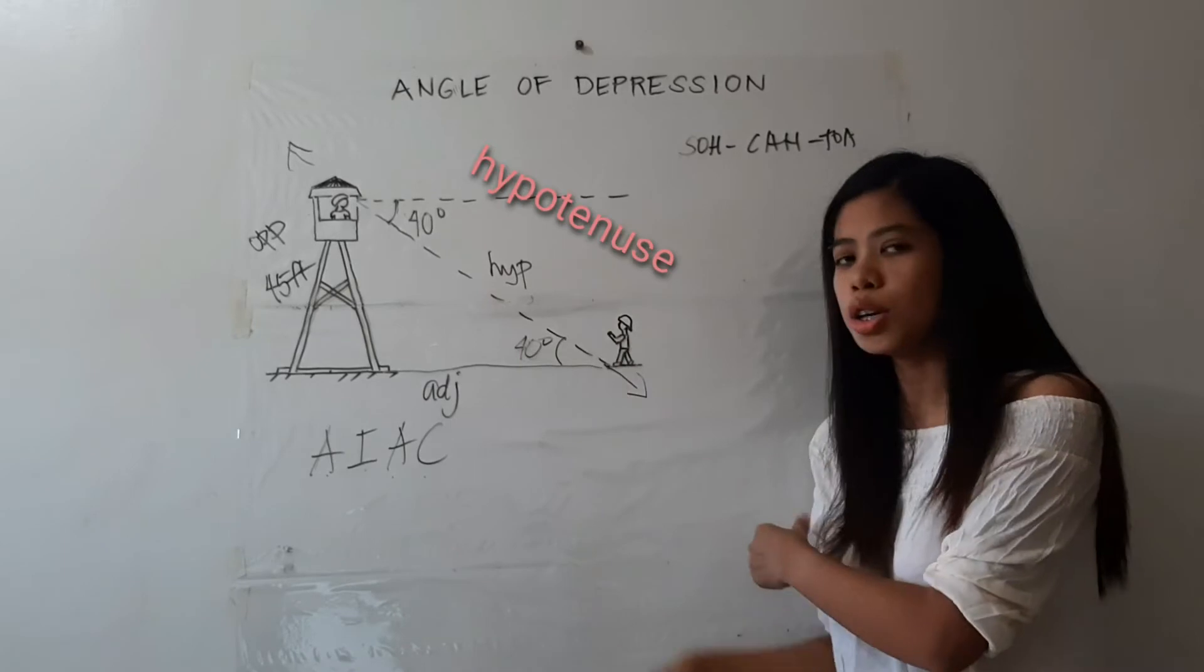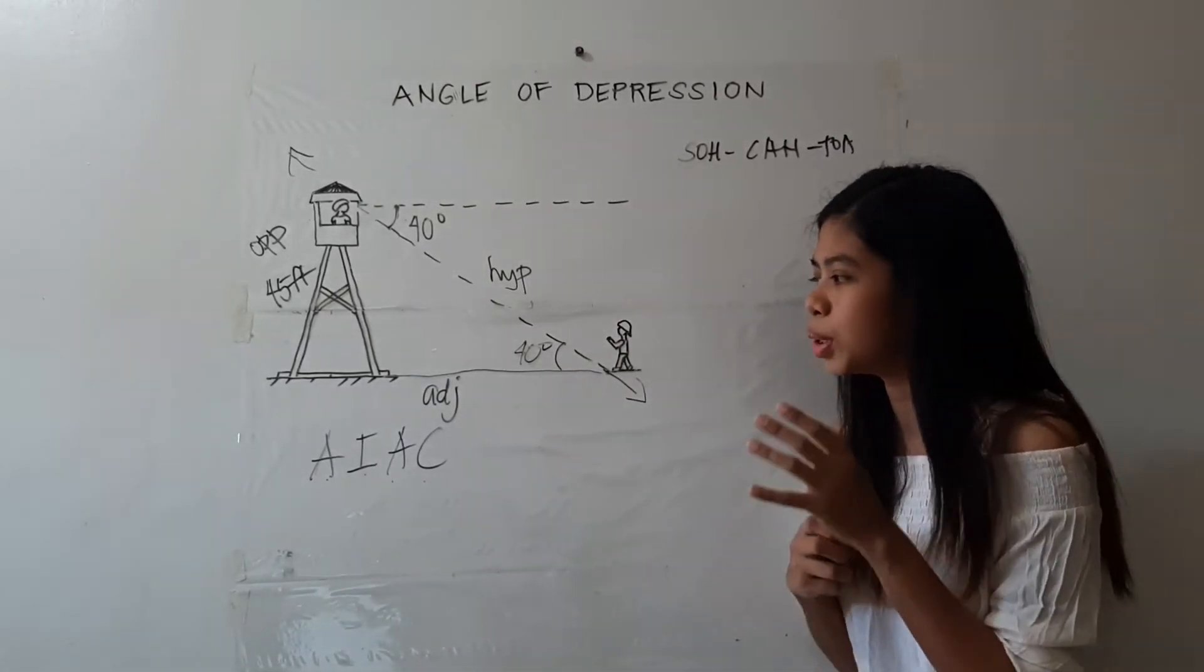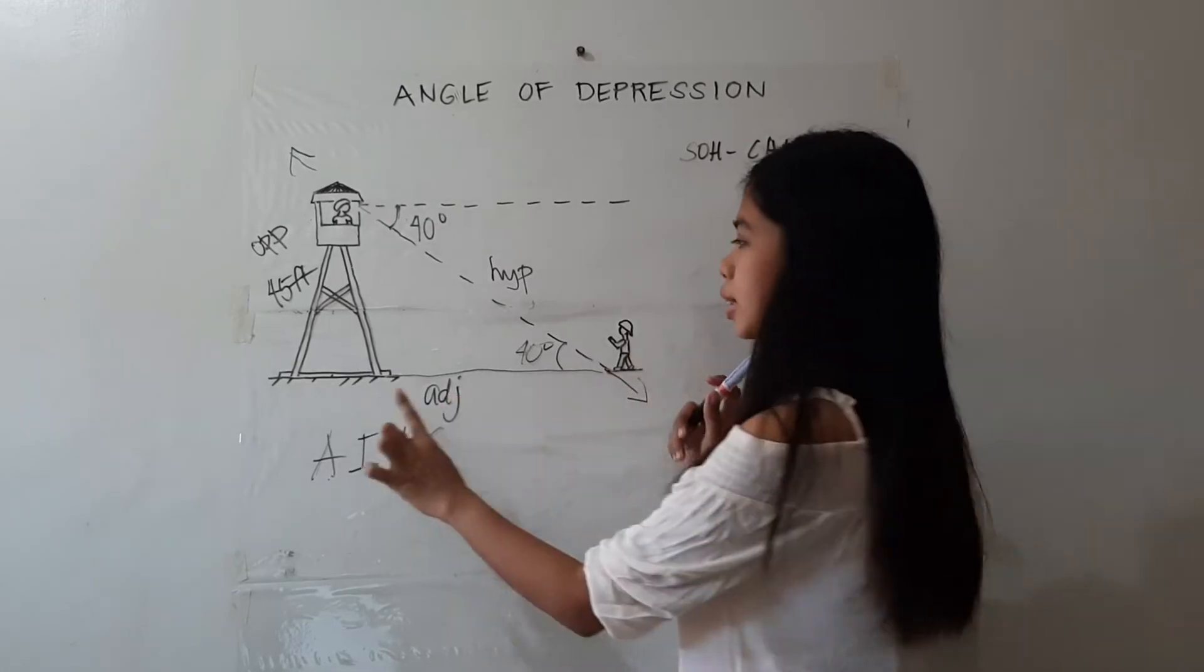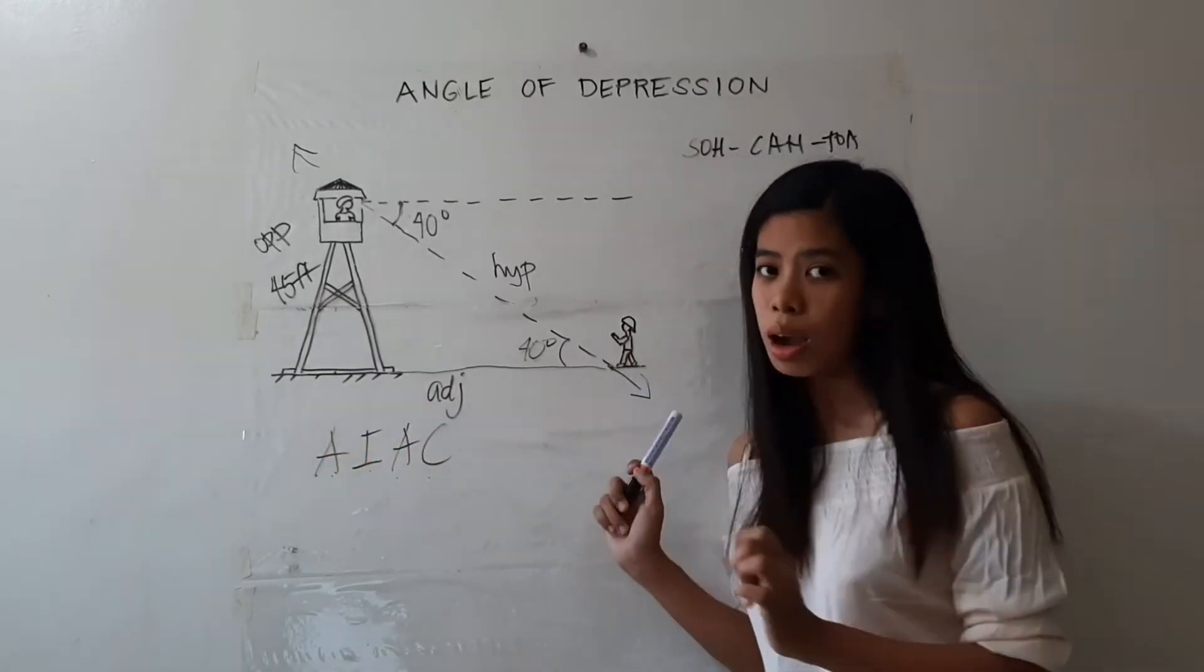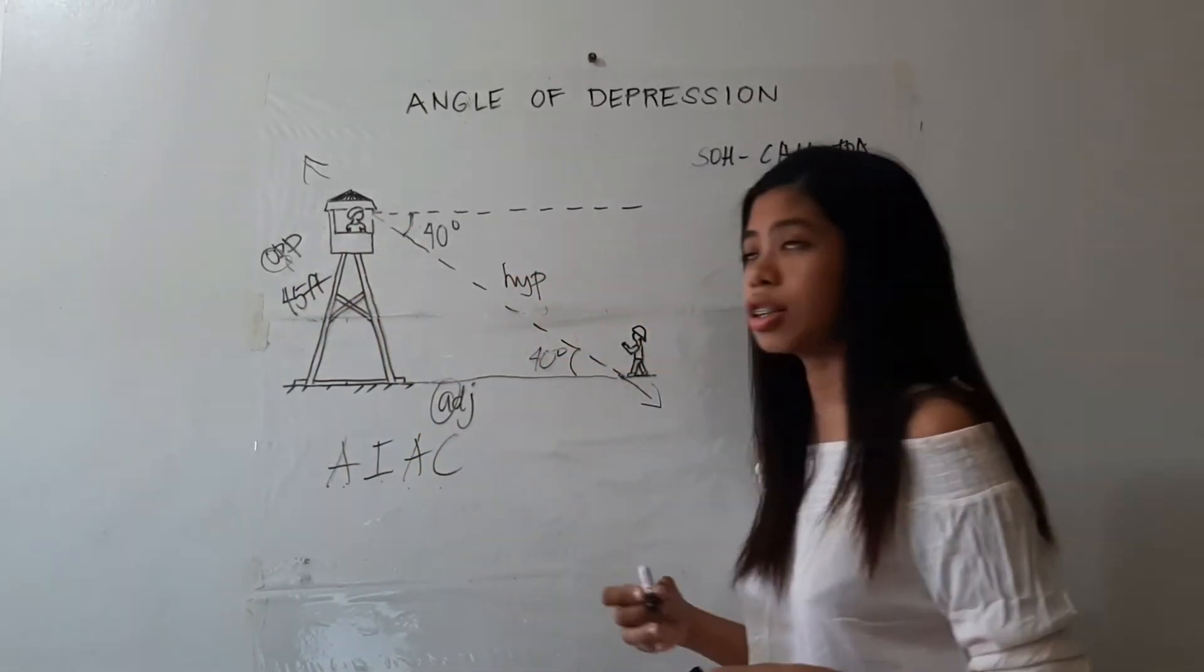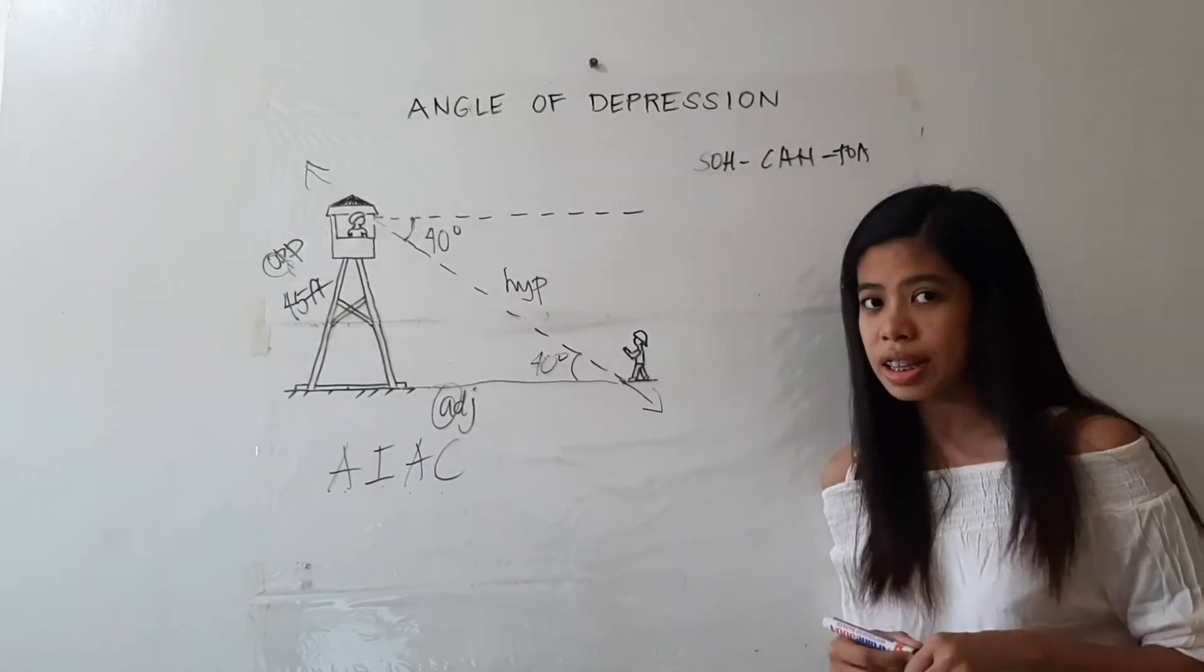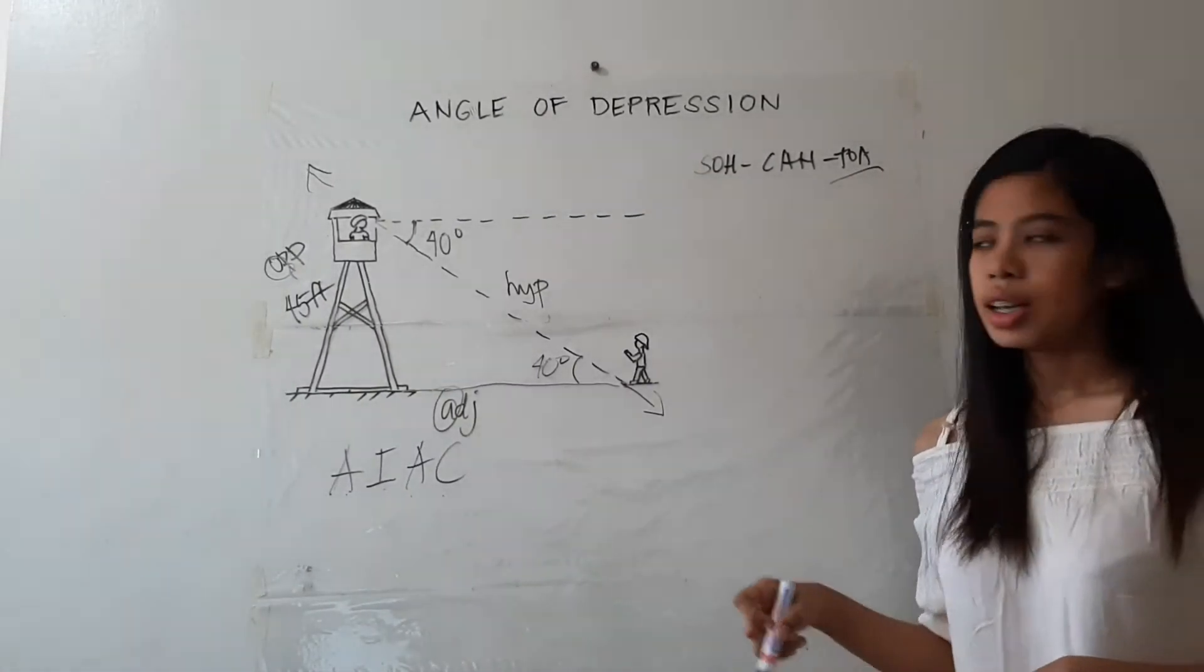Anyway, we won't be using the hypotenuse in this problem. So since we are after the distance between the forest ranger's partner and the base of the tower, that's the adjacent, given the opposite which is the height of the tower, 45 feet, we are going to use TOA.